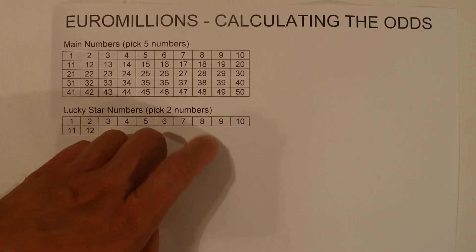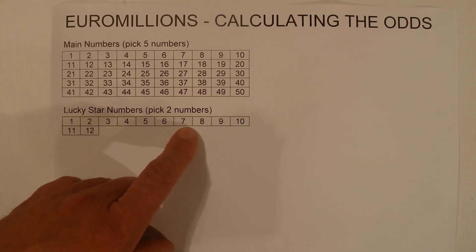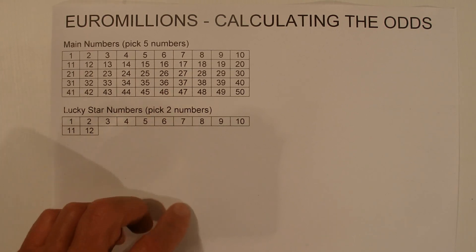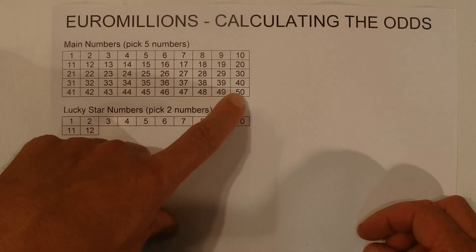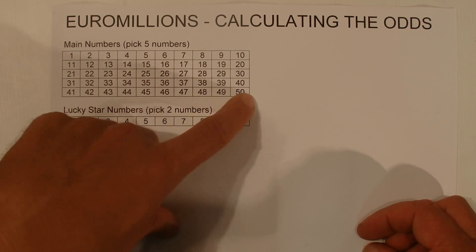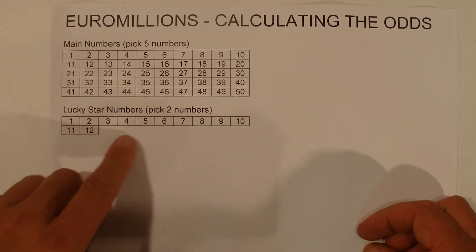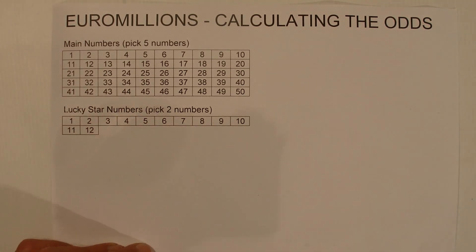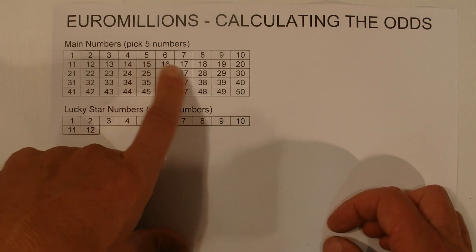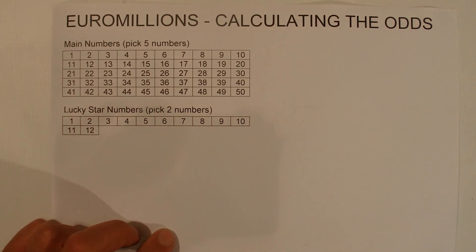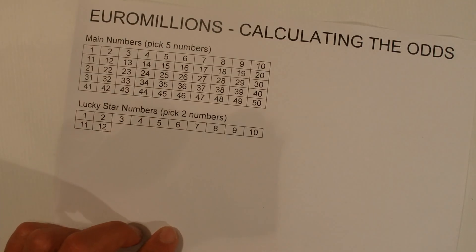Euro Millions is a lotto style game played in a number of Western European countries. The object of the game is you've got 50 numbers and you have to correctly select five out of 50 in the main number section, and then you've also got to select two numbers in the Lucky Star section. If you select the five numbers in the top section and two numbers in the bottom section, then you win first prize and you win a lot of money.